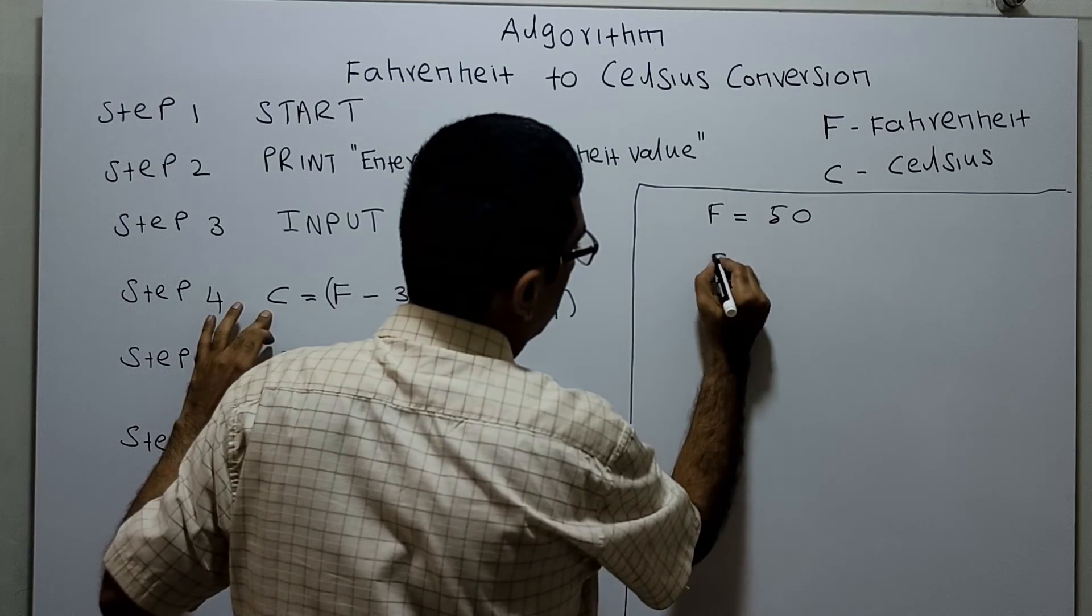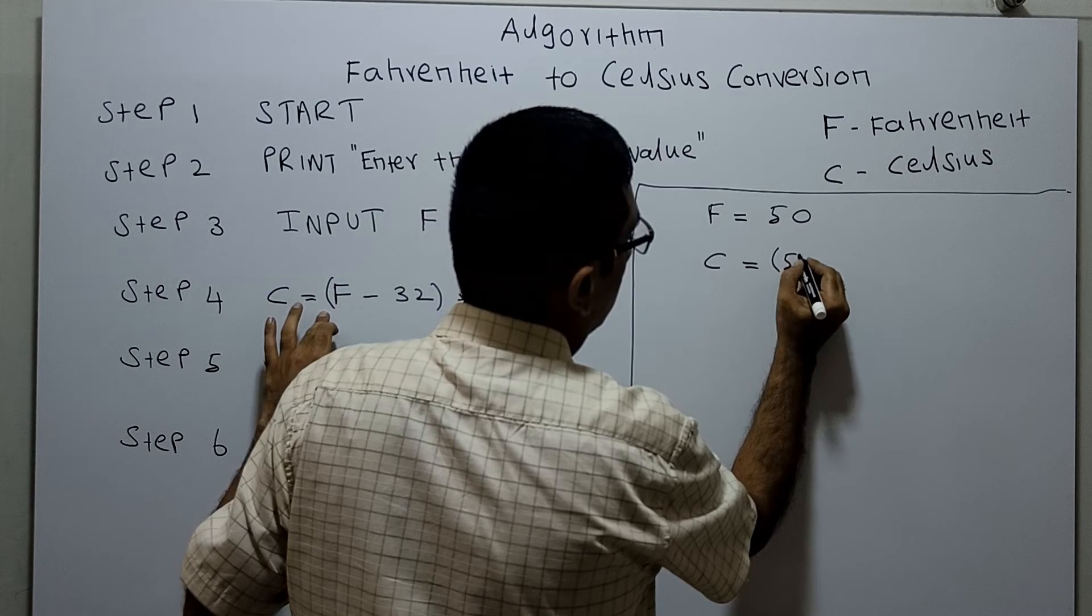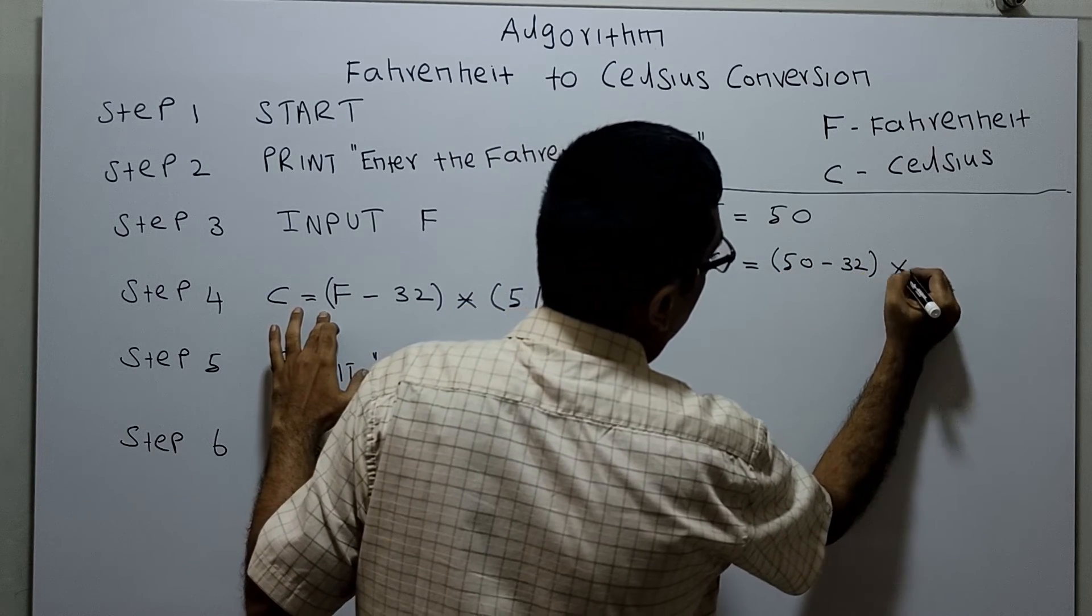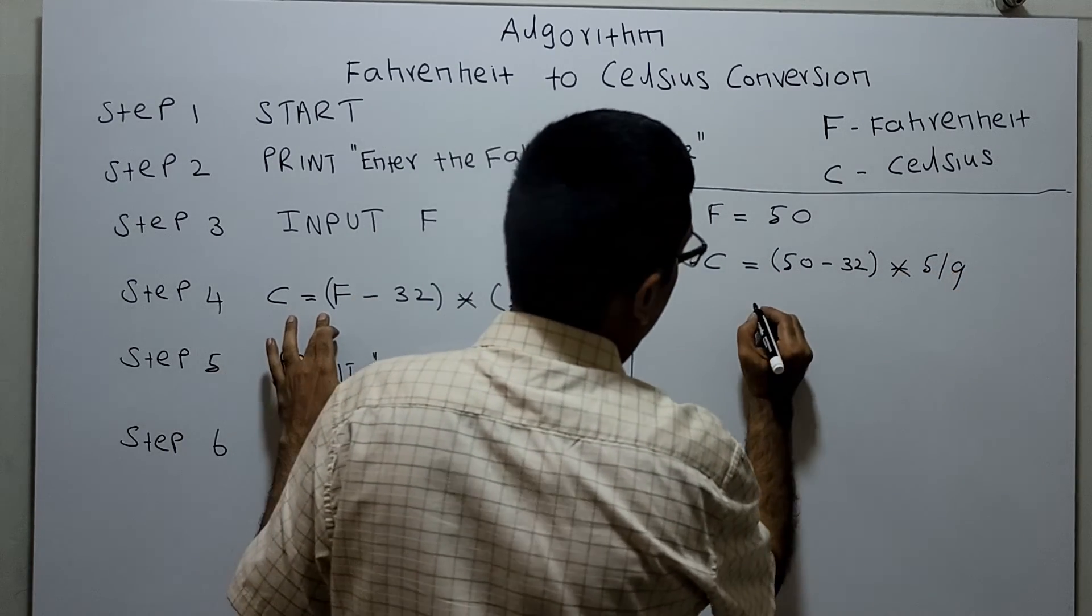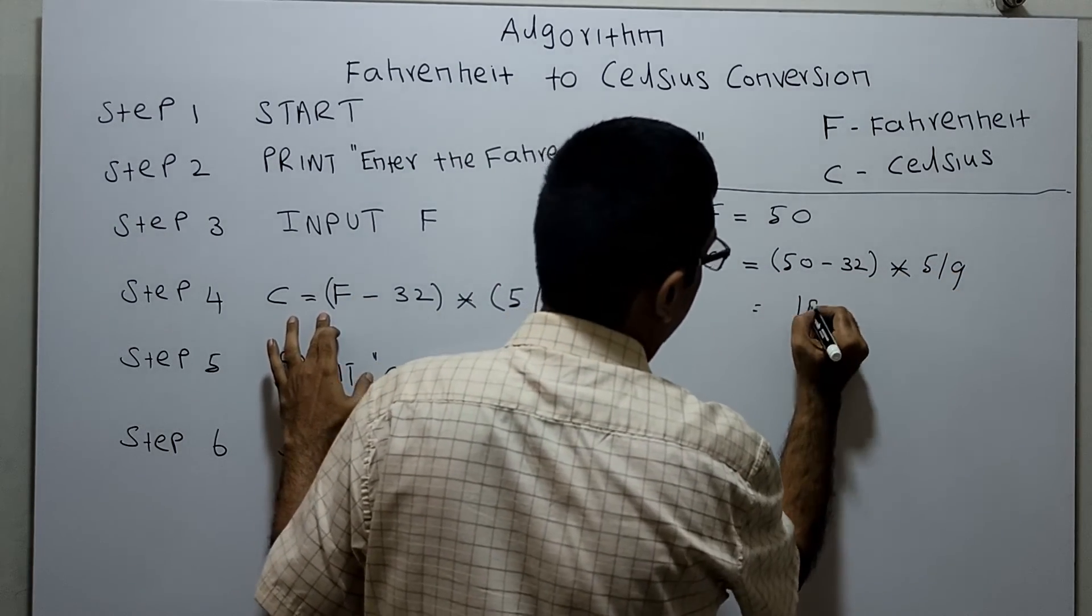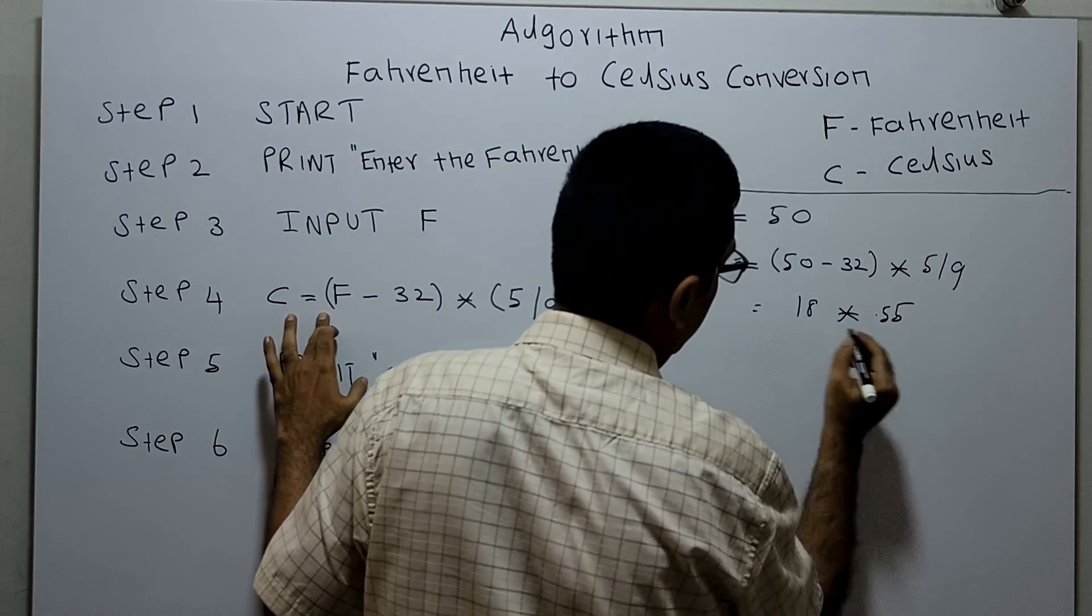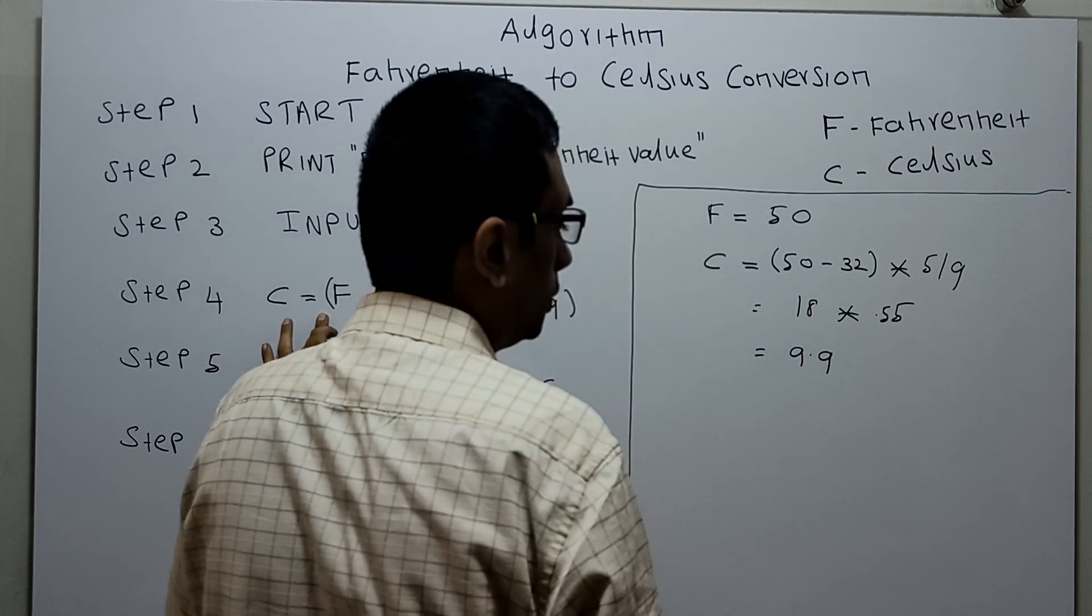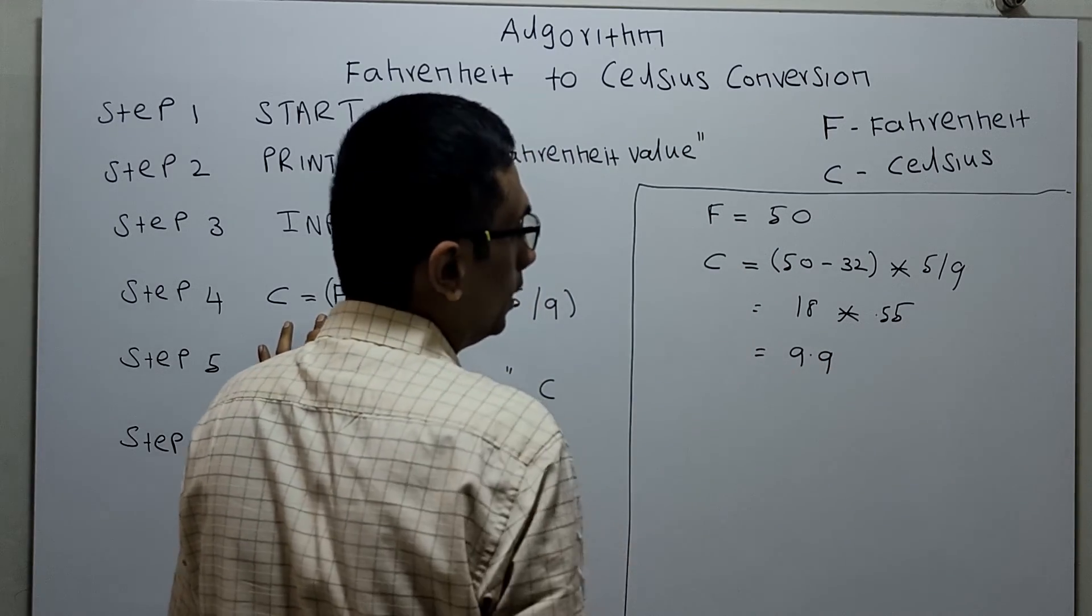Celsius equals F minus 32: 50 minus 32 equals 18. 18 multiplied by 5 divided by 9, so this is 18 times 5 which equals 90, divided by 9. The value is 10, so 10 degrees Celsius. Actually, the precise value is 9.9. So 50 degrees Fahrenheit converts to 9.9 degrees Celsius.